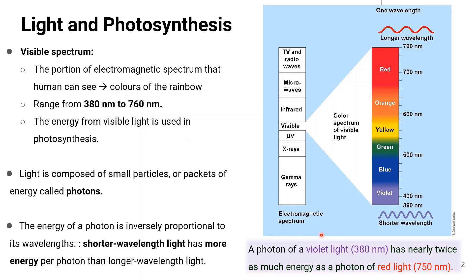In the electromagnetic spectrum, we are interested in the visible spectrum — the portion of the electromagnetic spectrum that humans can see, which is the colors of the rainbow. The visible spectrum has wavelength ranges from 380 nanometers to 760 nanometers, and this is where the energy used in photosynthesis falls.